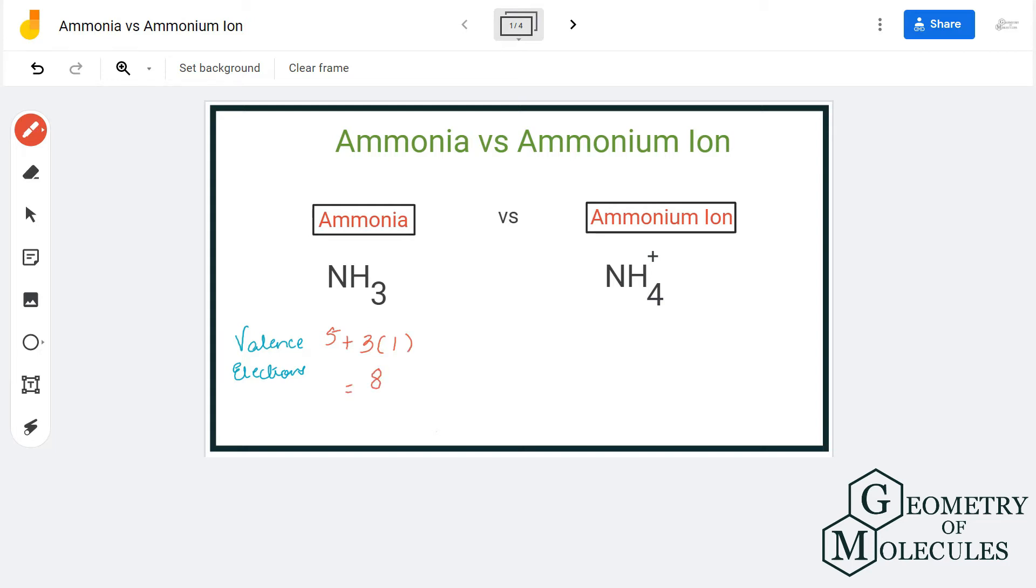So there are eight valence electrons for NH3. When we move to NH4+, here we have four hydrogen atoms, so there will be nine. But as you can see,